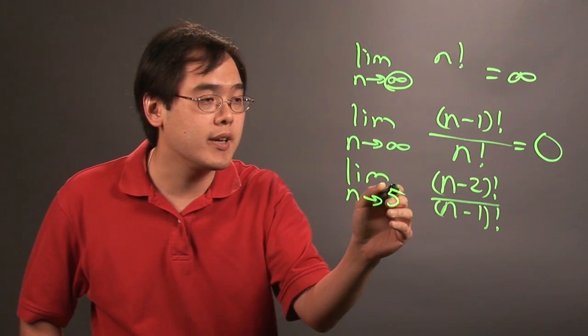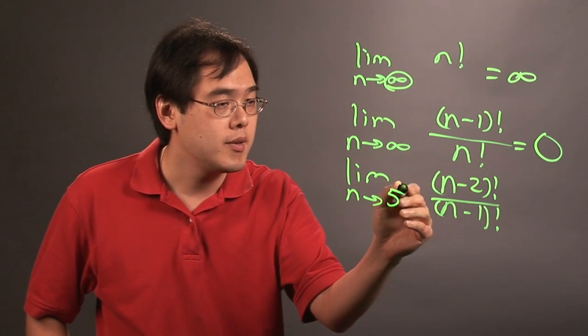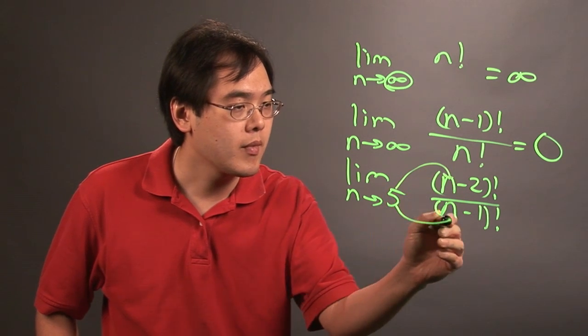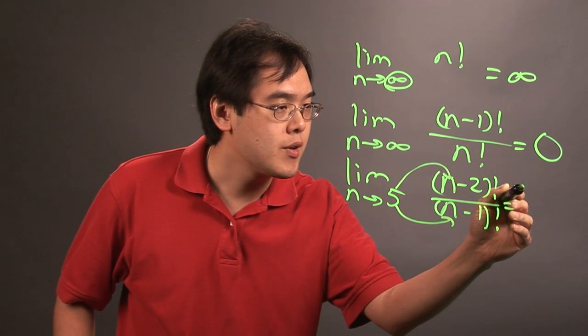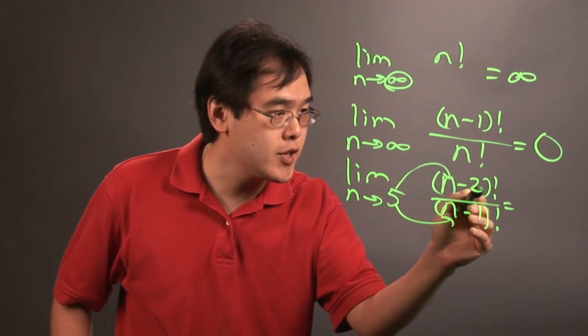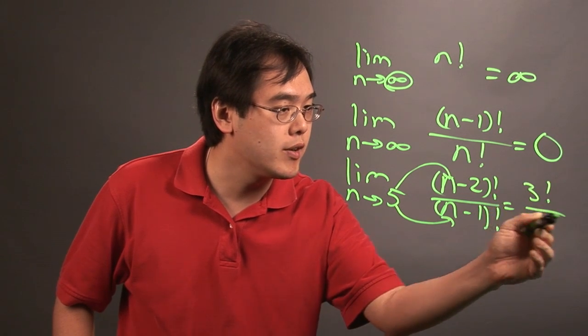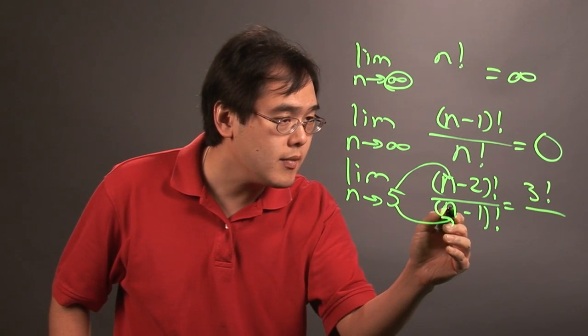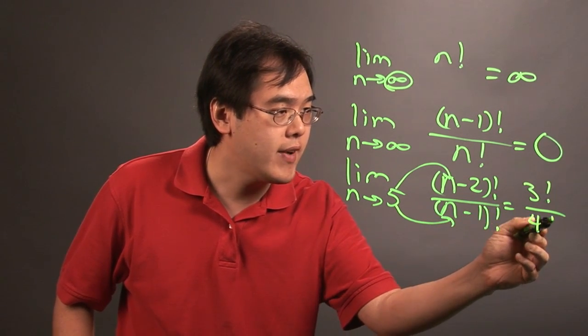What this allows you to do here is plug in five into both places for n, and you'll have as a result, 5 minus 2 is 3, so it'll be 3 factorial over 5 minus 1 is 4 factorial.